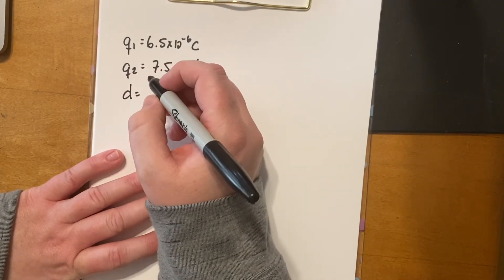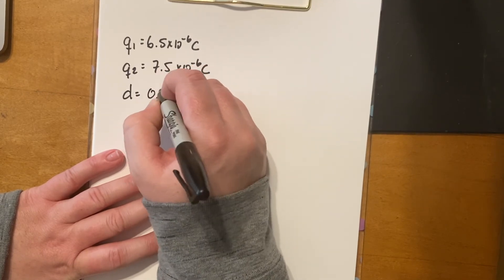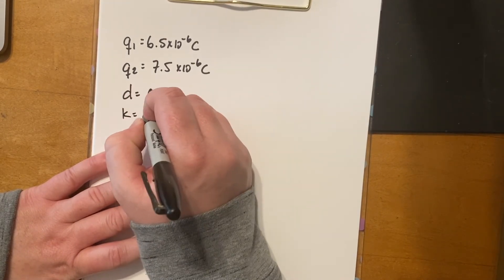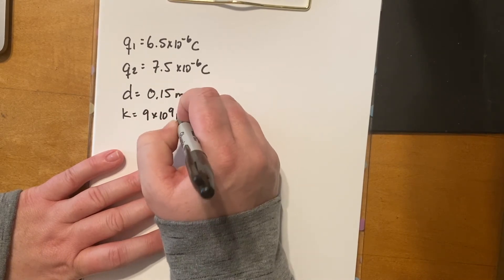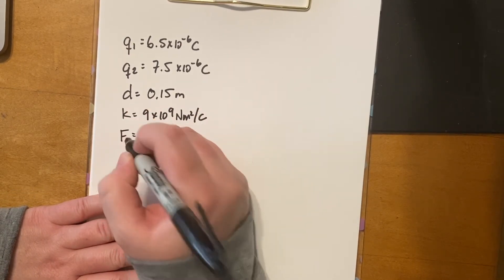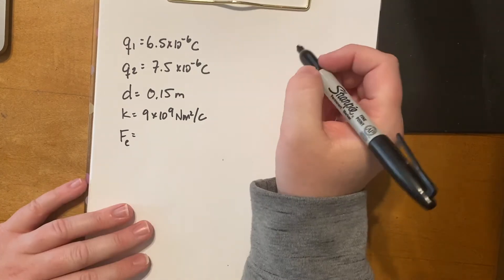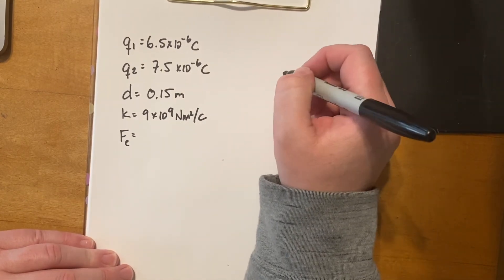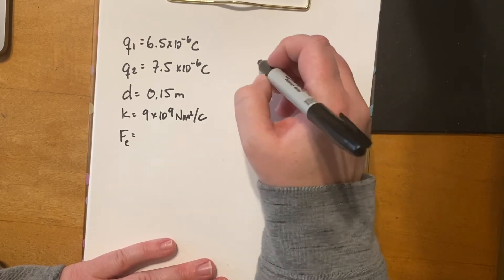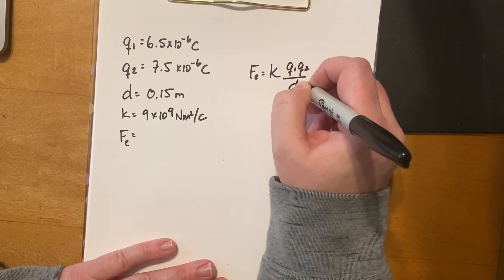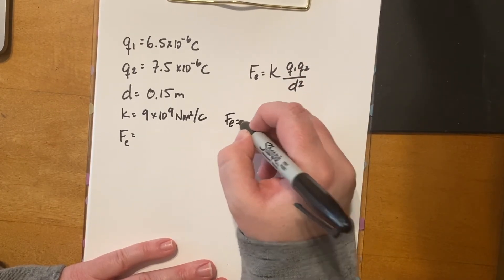The distance between the two charges is 0.15 meters — that's 15 centimeters, written as 0.15 meters. Our k value equals 9 × 10⁹ N·m²/C², and we're solving for the electric force Fe. We set up the equation: Fe = k × q1 × q2 / d², and plug in the numbers: Fe = 9 × 10⁹ × (6.5 × 10⁻⁶) × (7.5 × 10⁻⁶) / (0.15)².